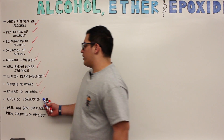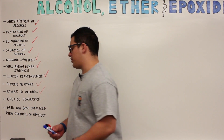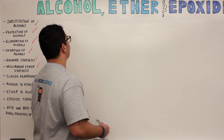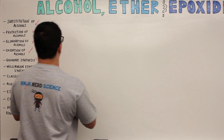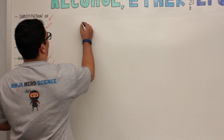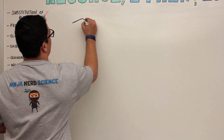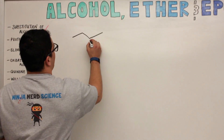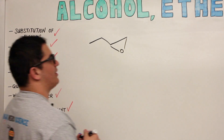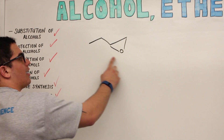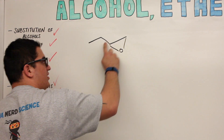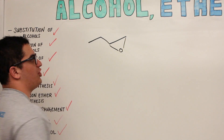Alright, so let's go ahead and do this. Epoxide formation — first off, what is an epoxide? It kind of looks a little bit like this. So it's kind of like a cyclic oxygen — you're going to have this oxygen in a cyclic form within the chain.